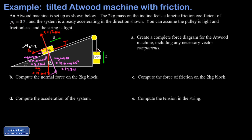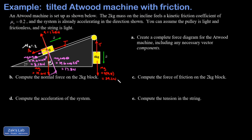Next, looking at the four kilogram hanging mass: it experiences the same tension T in the string, provided the string and pulley are light. Gravity also pulls straight down on it with magnitude mg = 4 times 9.8 = 39.2 newtons. That pretty thoroughly completes part a — the force diagrams.